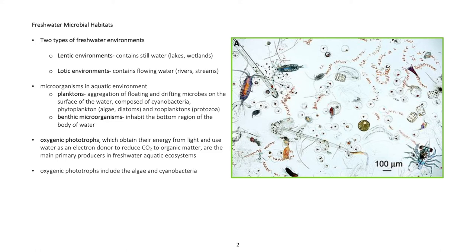Planktons are aggregations of floating and drifting microbes on the surface of the water, composed of cyanobacteria, phytoplankton, algae, diatoms, zooplanktons, and protozoa. Benthic microorganisms inhabit the bottom region of the body of water. Oxygenic phototrophs, which obtain their energy from light and use water as an electron donor to reduce carbon dioxide to organic matter, are the main primary producers in freshwater aquatic ecosystems. Oxygenic phototrophs include algae and cyanobacteria.